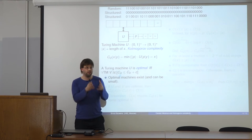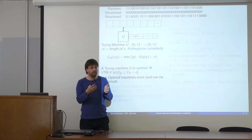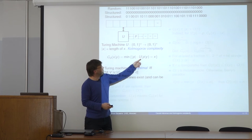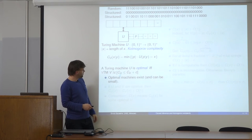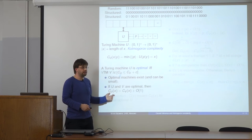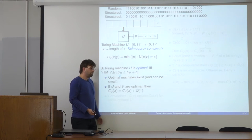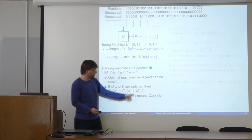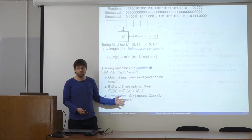If we have two optimal machines, they define the same Kolmogorov complexity function within a constant. This means that if we just have some inequality which holds within an additive constant, we don't have to fix the machine — we can assume any optimal machine.